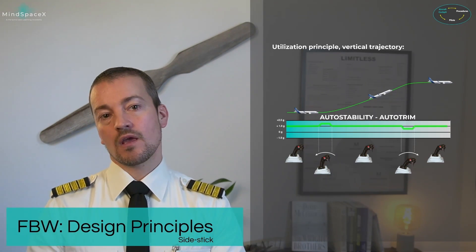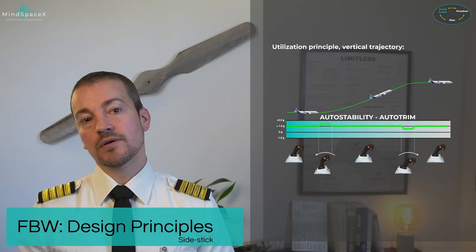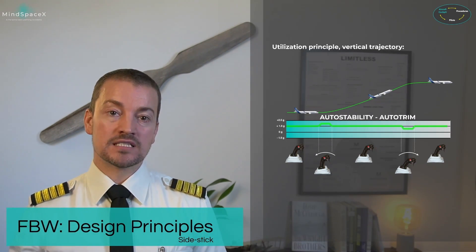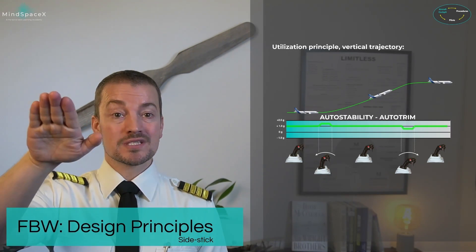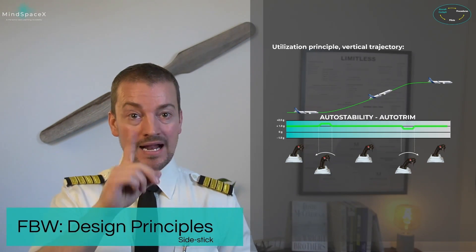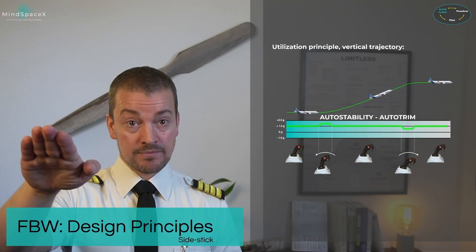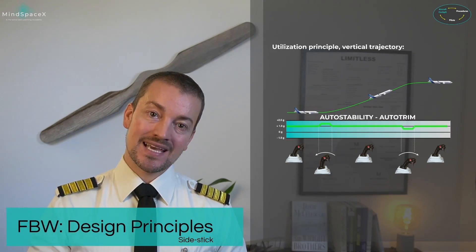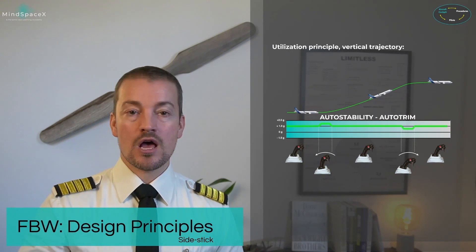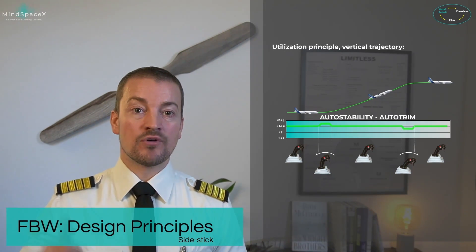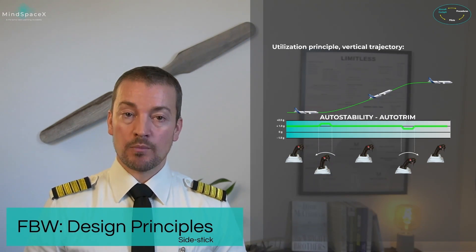In a conventional aircraft, if you put the nose up 10 degrees, trim, and leave it hands-off, the aircraft will start climbing, but as performance reduces with altitude and density, the nose will slightly drop unless you apply more back pressure. In our fly-by-wire aircraft, that's not the case. You've asked for that attitude, and the aircraft will continue to climb. While it needs more elevator deflection to maintain that attitude at high altitude, that is the job of the flight control computer, not the pilot.